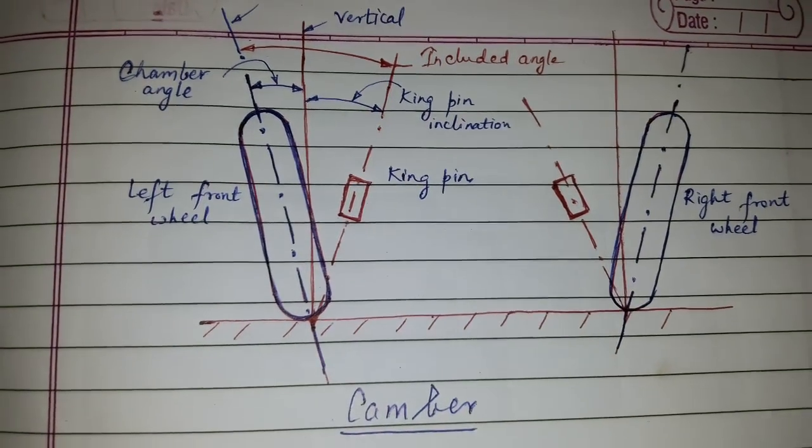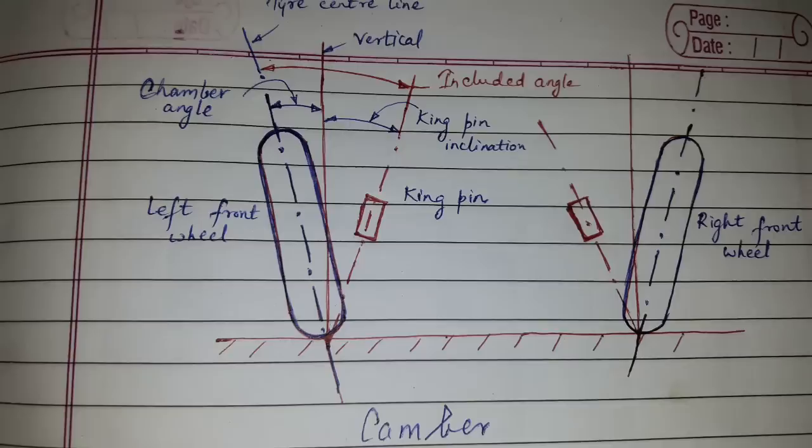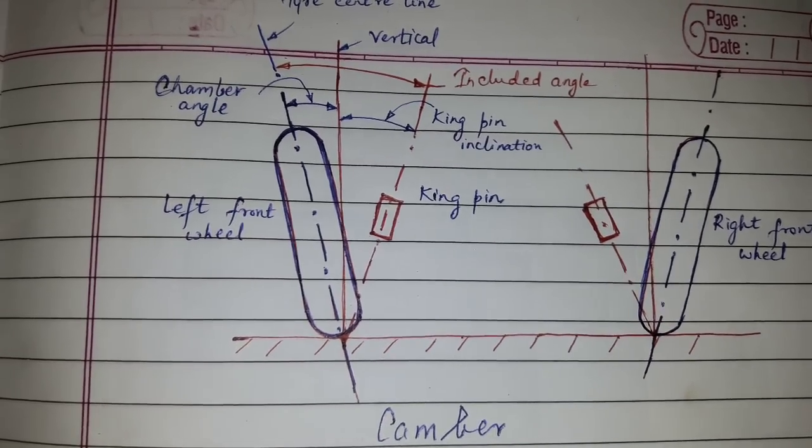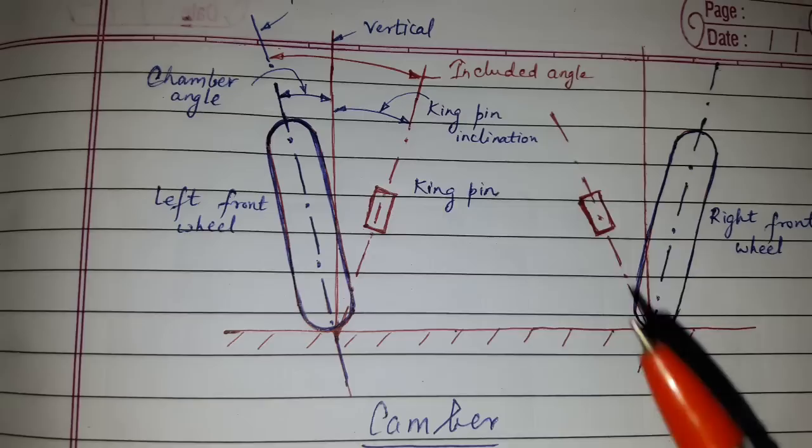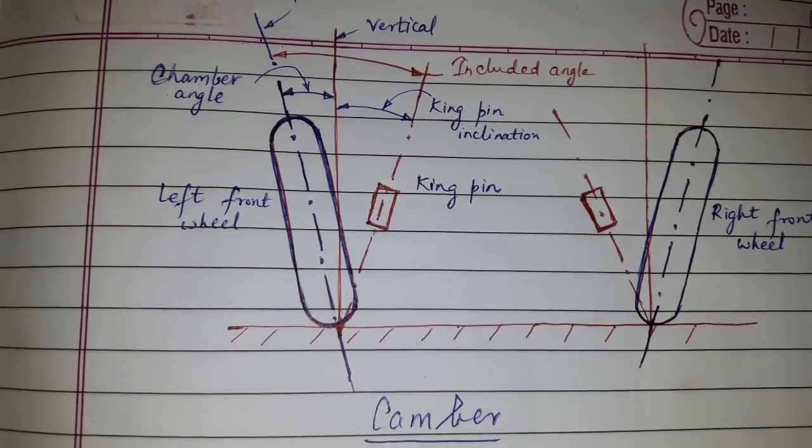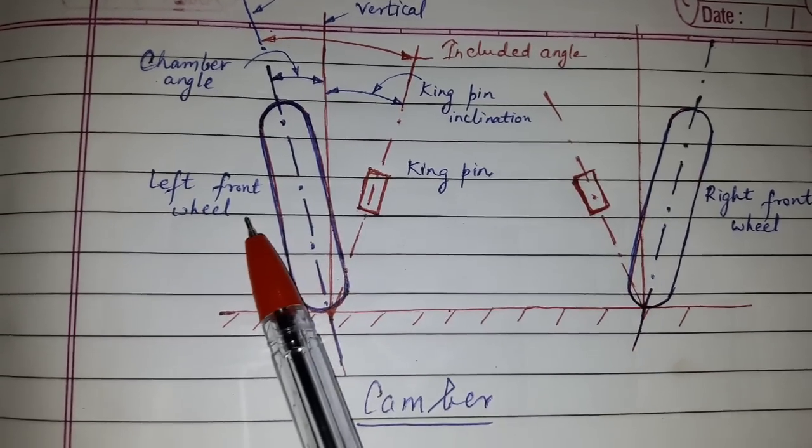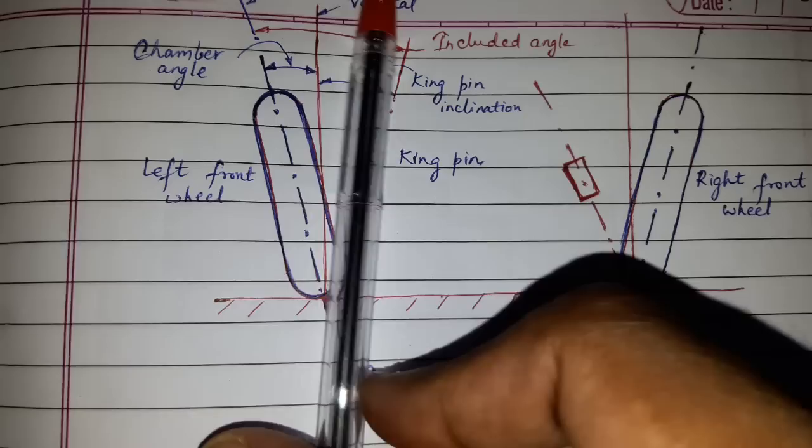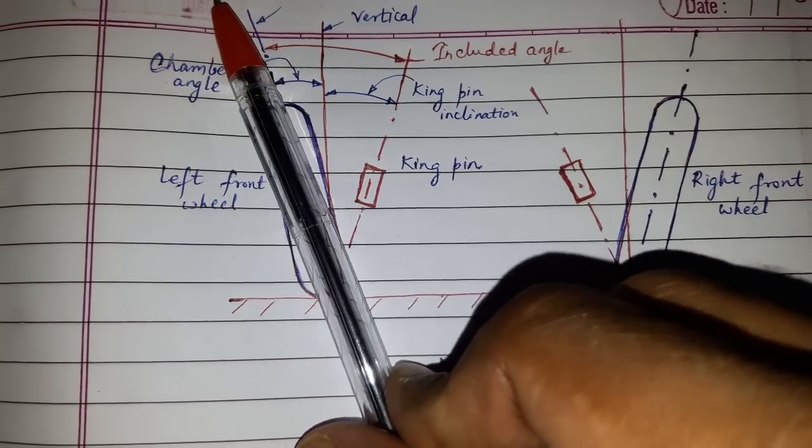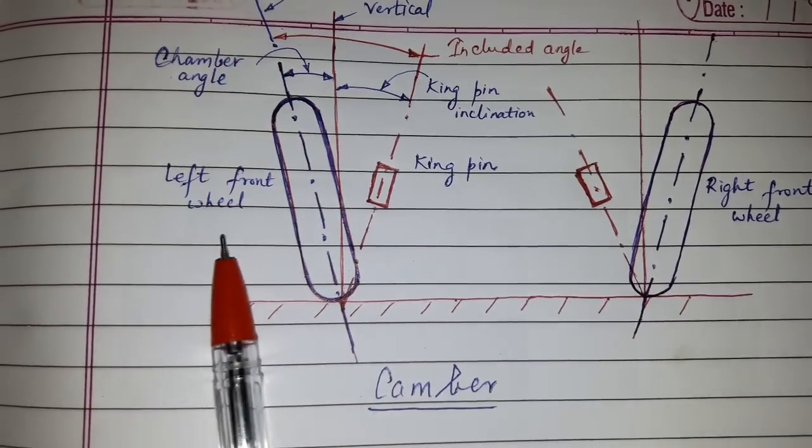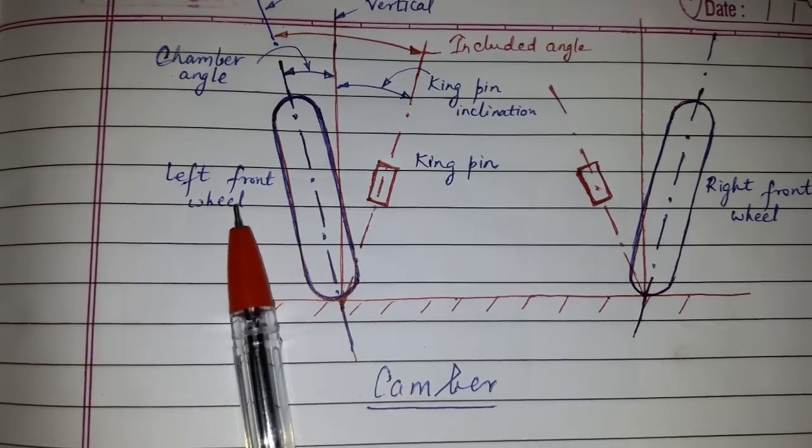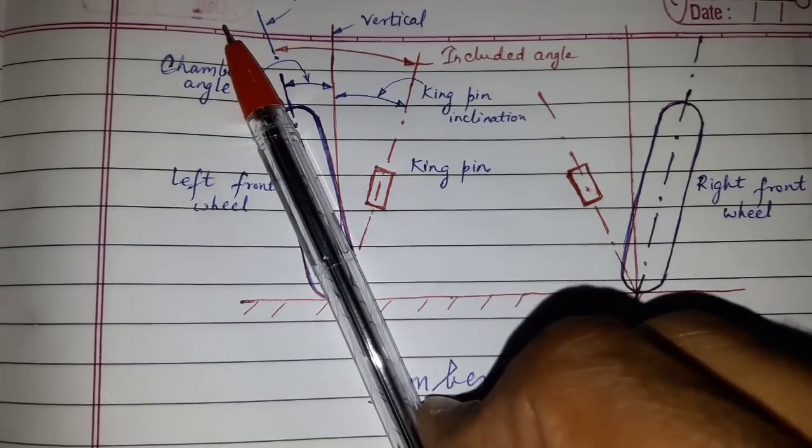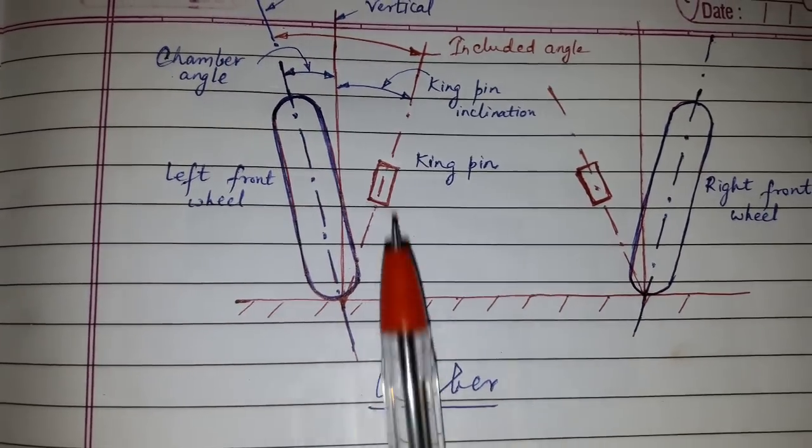Hi friends, today's topic of discussion is steering geometry. In that, we will study camber. Camber is the tilt of the front wheel from the vertical plane. You can see this is the tilt of the front wheel. This is the left front wheel and this is the right front wheel. So it is the tilt of the front wheel from the vertical plane.